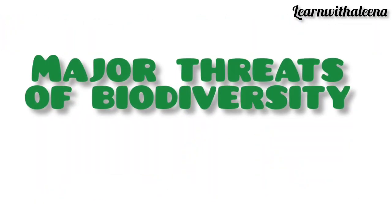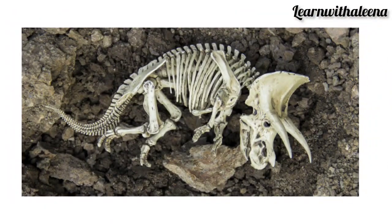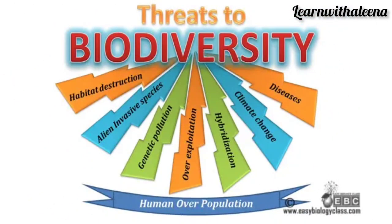Major threats to biodiversity: the colonization of tropical islands has led to the extinction of 784 species, and some groups like amphibians are more vulnerable to extinction. The major threats include escalating human population, deforestation, land use change, over-utilization of natural resources, poaching, and pollution — all direct outcomes of increasing population.